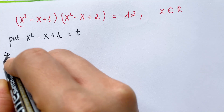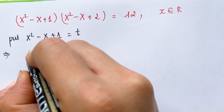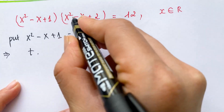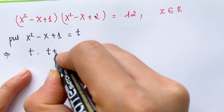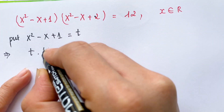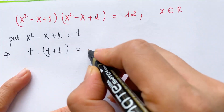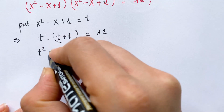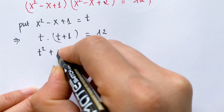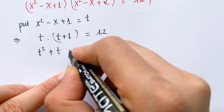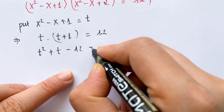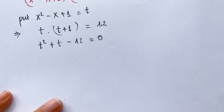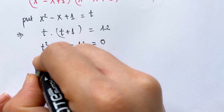First we can say t times t plus one equals 12. And then we also have t squared plus t minus 12 equals zero.